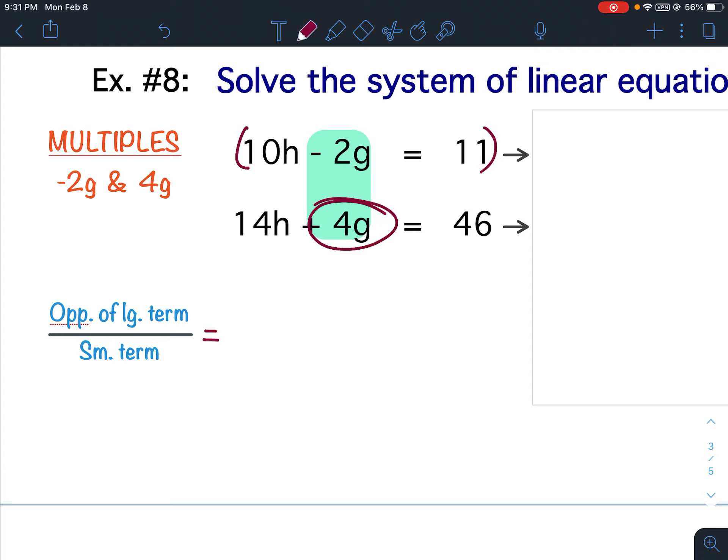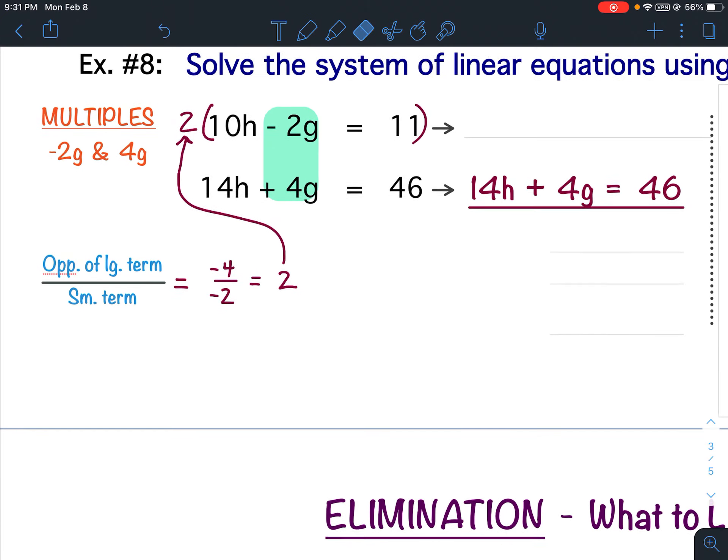Well, I multiply the opposite of the larger term divided by the smaller term. So the opposite of this larger term, the opposite of positive 4, would be negative 4, and then divided by the smaller term, which is negative 2. Negative 4 divided by negative 2 is positive 2. So we are going to multiply the top equation by positive 2. The bottom equation will stay the same.